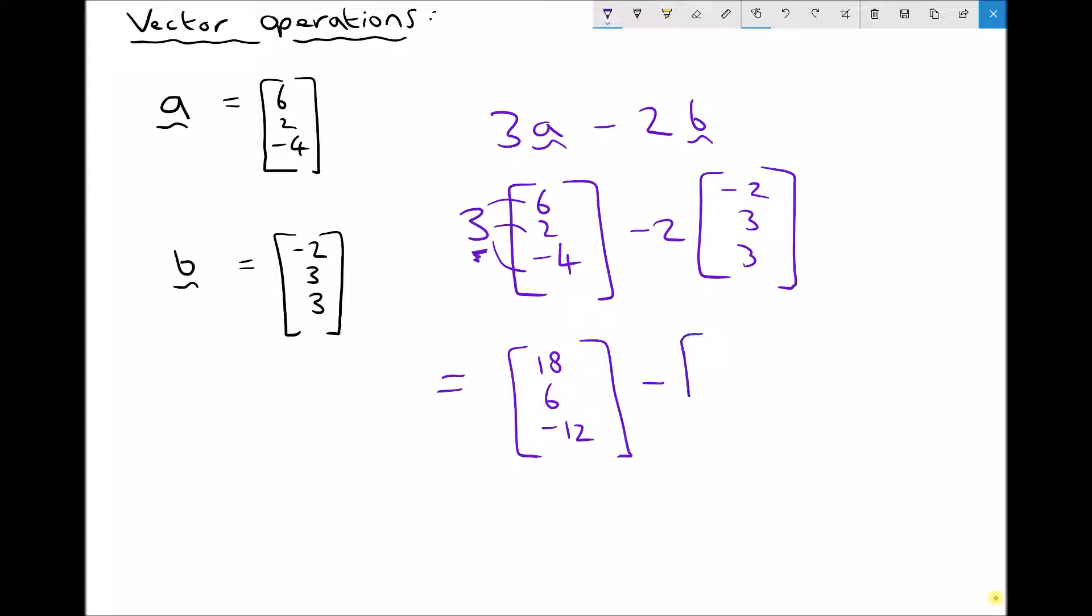And then I would repeat that for my second vector. So this time I have 2 times minus 2 which is minus 4. I have 2 times 3 which is 6. And 2 times 3 which is 6.